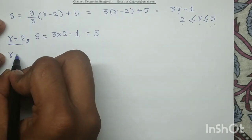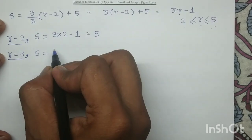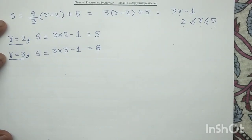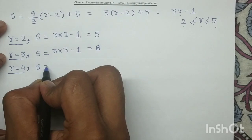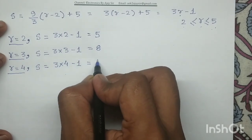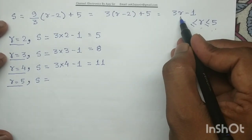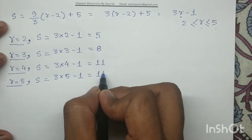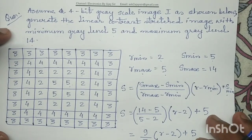For r = 3: s = 3×3 − 1 = 8. For r = 4: s = 3×4 − 1 = 11. And lastly, for r = 5: s = 3×5 − 1 = 14. Now we have to draw the output image. Since the input image dimension is 8×8, the output image dimension should also be 8×8.